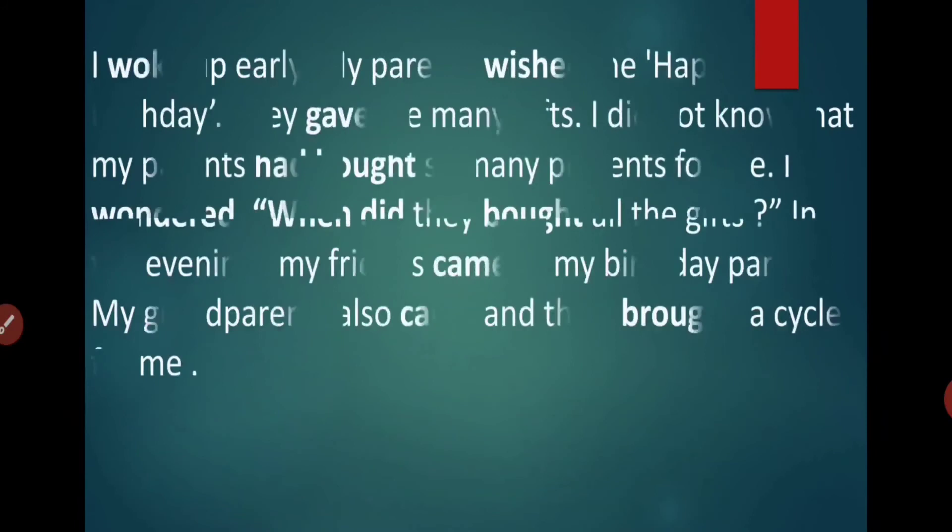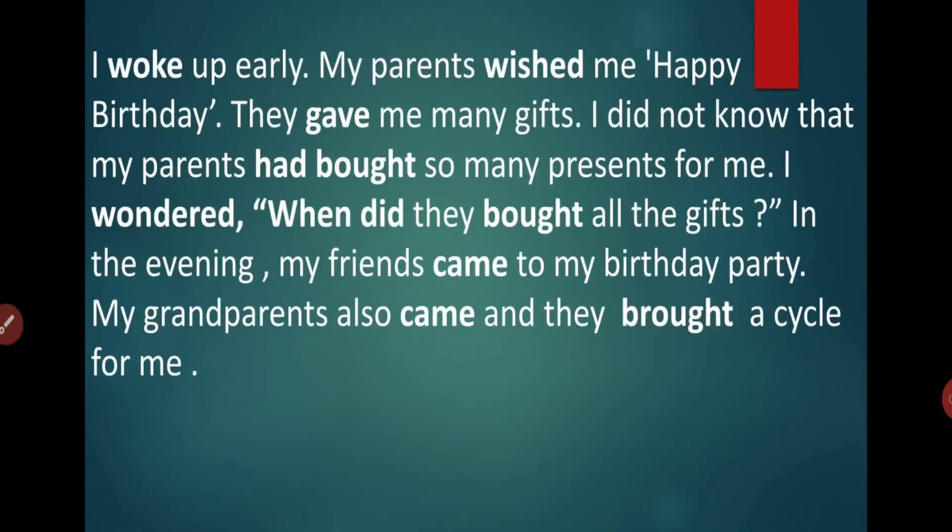Now let's see what's next. So here is a paragraph which is written in simple past tense. So let's see what is there. I woke up early. Wake up. Instead of wake, the girl have mentioned woke. Woke means she has already woked up. So now what happened? My parents wished me happy birthday.